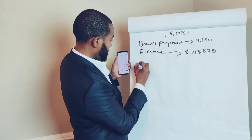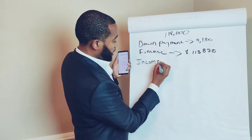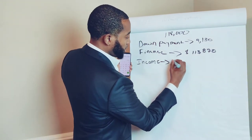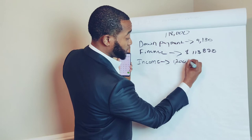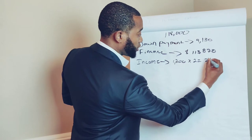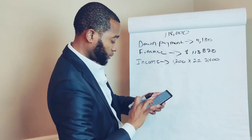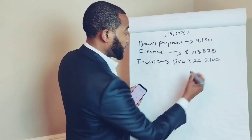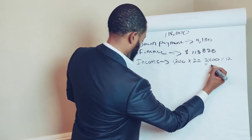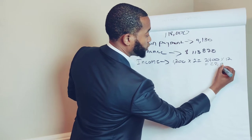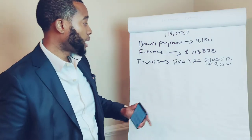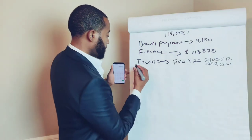Your down payment is $4,130 and you're financing $113,870. Now you need to find out what your income is on this property. The income on this particular property is about $1,200 a month per room. Multiply that times two — that's $2,400 per month. Times 12 months, that gives you $28,800 per year in gross income.